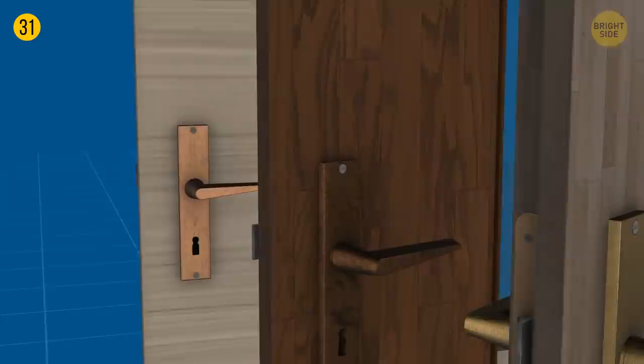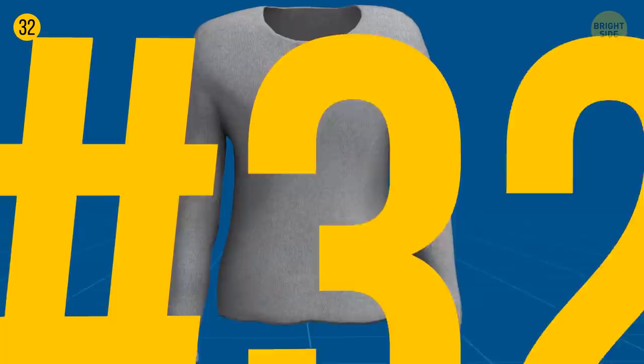A doorknob made of brass, bronze, and some copper alloys has an anti-germ effect because of its metal properties.